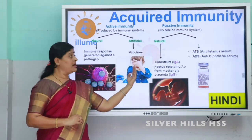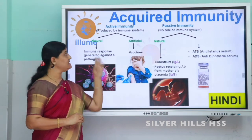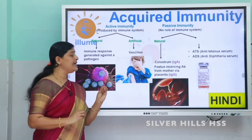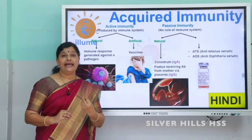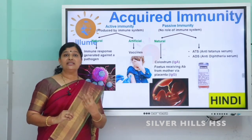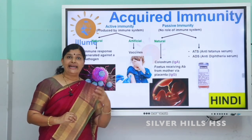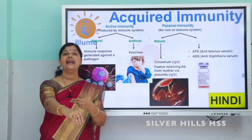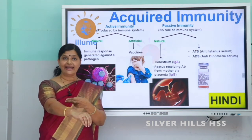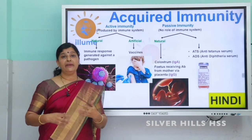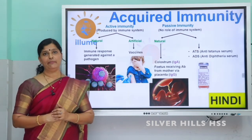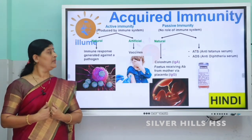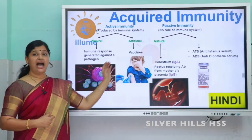Artificial active immunity — here, for example, we take vaccines. A vaccine is actually a dead or inactivated germ, or the toxin produced by the germ, taken into our body as a medicine. So what happens? Antibodies against it are produced. Artificially we are creating a situation so that antibodies are ready in our body. This is an example of artificial active immunity.